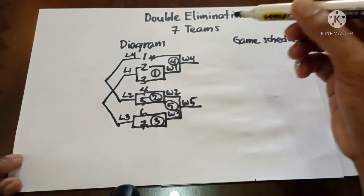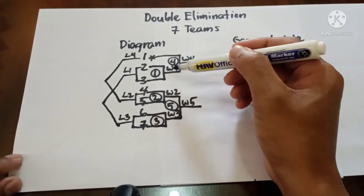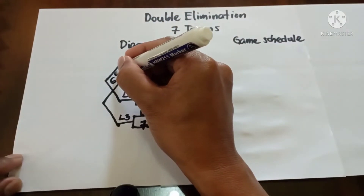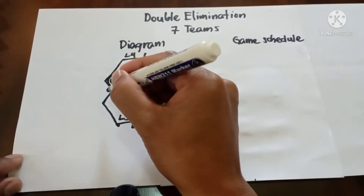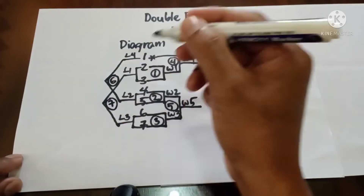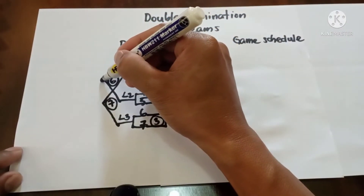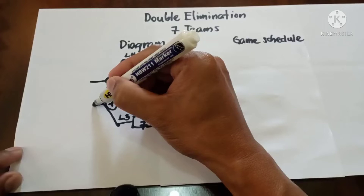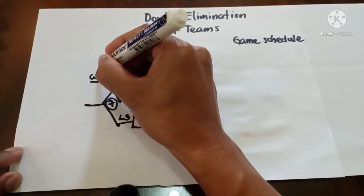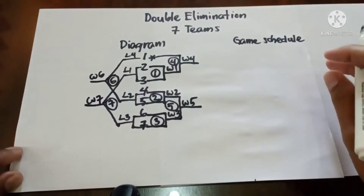This gives us Game 6 and Game 7 in the loser's bracket. The results are Winner 6 and Winner 7.